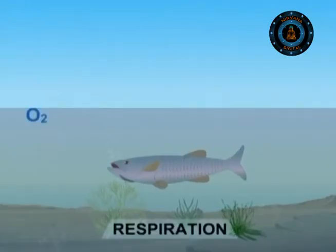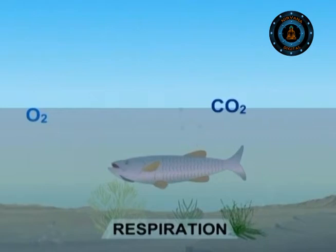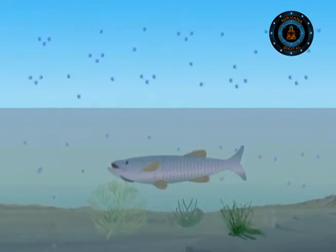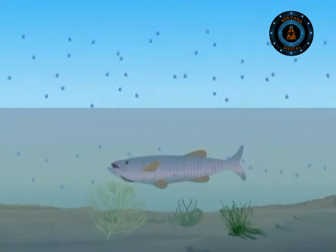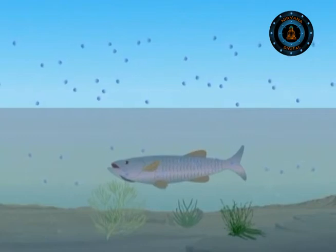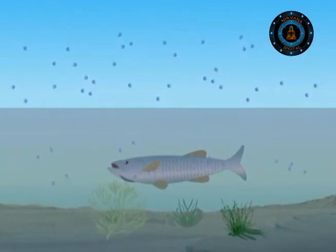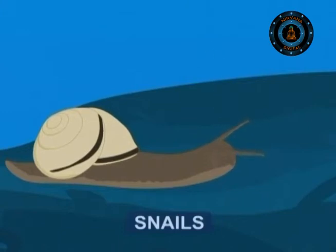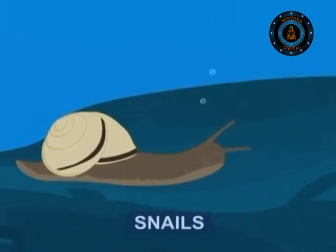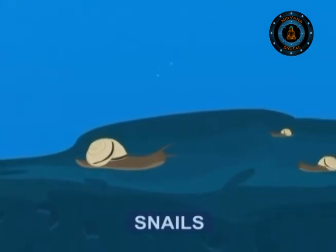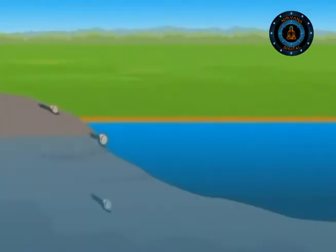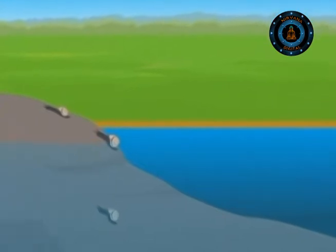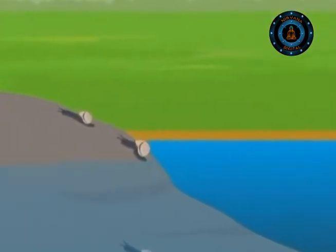Respiration is a process through which animals release energy from food and require oxygen. But water contains less oxygen compared to air, so obtaining oxygen from water is a major problem for water creatures. Snails living in freshwater use gills to extract oxygen from the water and can only survive in water with high oxygen content. Other snails have lungs, so they can come up from their home in stagnant water to fulfil their need for air.